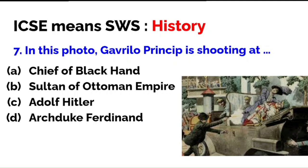In this photograph, Gavrilo Princip is shooting at — many textbooks don't give the name of the assassin, but his name is Gavrilo Princip. He is shooting the man in the black coat and hat. Is it the chief of Black Hand, the Sultan of the Ottoman Empire, Adolf Hitler, or Archduke Ferdinand? The correct answer is D — Archduke Ferdinand, the immediate cause of the First World War. Please be able to identify this photograph.